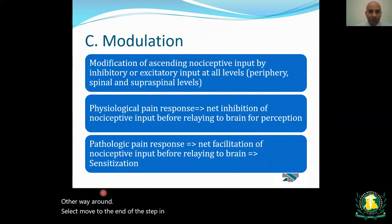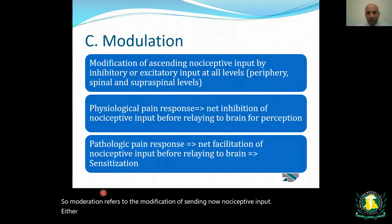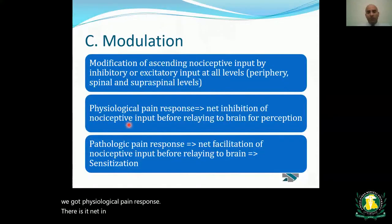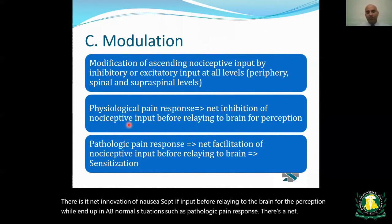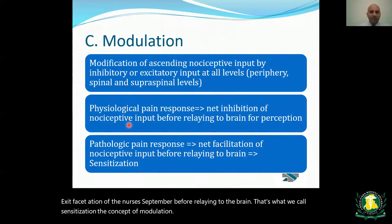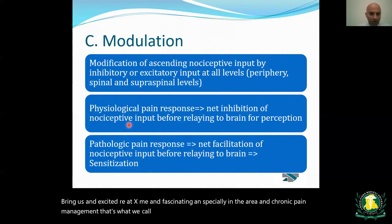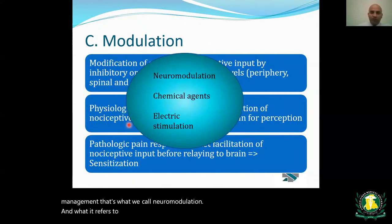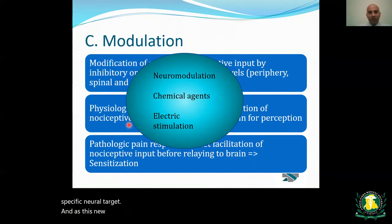Modulation refers to the modification of ascending nociceptive input by inhibitory or excitatory input at all levels. In normal circumstances, there is net inhibition of nociceptive input before it reaches the brain — physiological pain response. In abnormal situations, there is net facilitation — pathological pain response — which is sensitization. This concept of modulation gives rise to neuromodulation: the application of exogenous chemical agents or electric stimulation to specific neural targets to modulate pain perception.